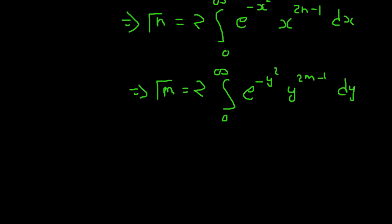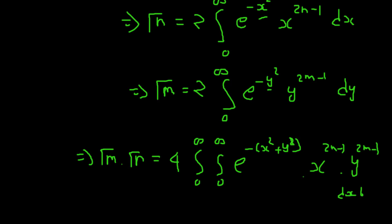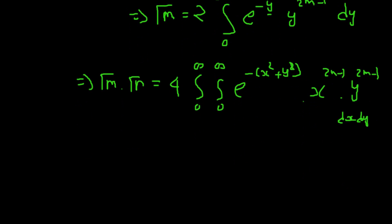Now we do the main step: multiplying gamma(n) times gamma(m). This gives 4 times the double integral from 0 to infinity of e to the power minus (x squared plus y squared), times x to the power 2n minus 1, times y to the power 2m minus 1, dx dy.